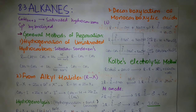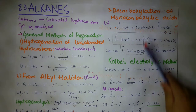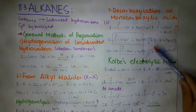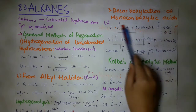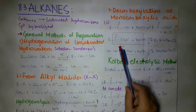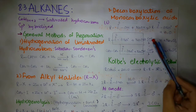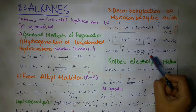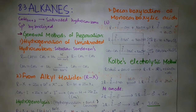There are two types under decarboxylation of monocarboxylic acid. In the first type, we used soda lime. The second type is Kolbe's electrolysis method. In electrolysis, there are positive and negative ions that move towards their respective electrodes and undergo either reduction or oxidation.